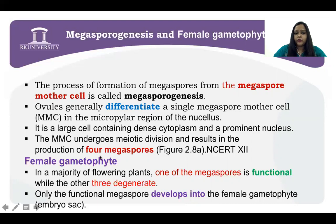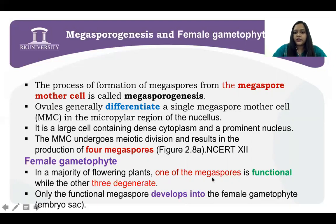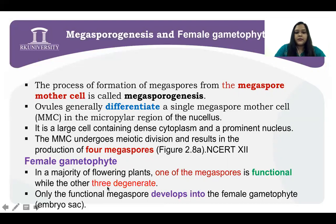Megaspore mother cells undergo meiotic division and result in the production of 4 megaspores. From these 4 megaspores, the female gametophyte will be produced. In the maturity of flowering plants, only one of the megaspores is functional — amongst the 4, only one is functional while the other 3 get degenerated. Only the functional megaspore develops into the female gametophyte, commonly called the embryo sac.